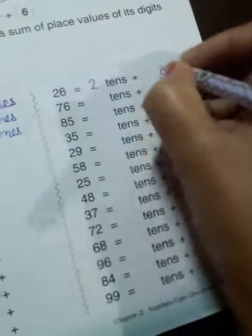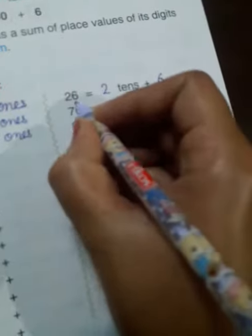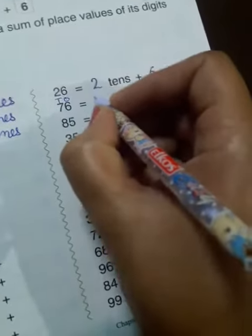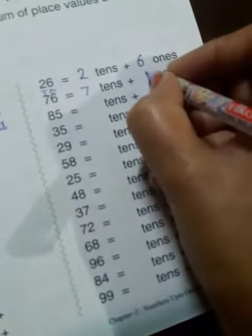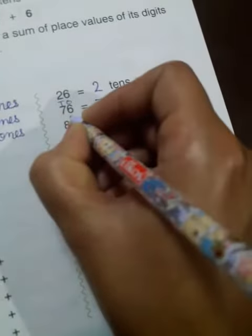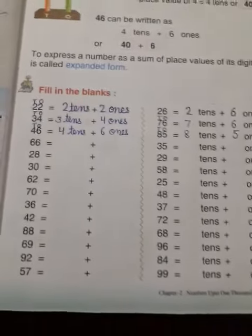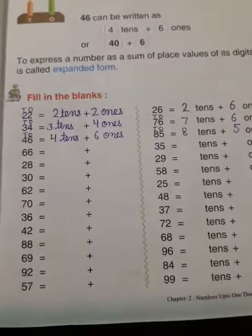Here 7 tens plus 6 ones. This is ones, this is tens. 8 tens plus 5 ones. These all sums same, do yourself. OK students, thank you.